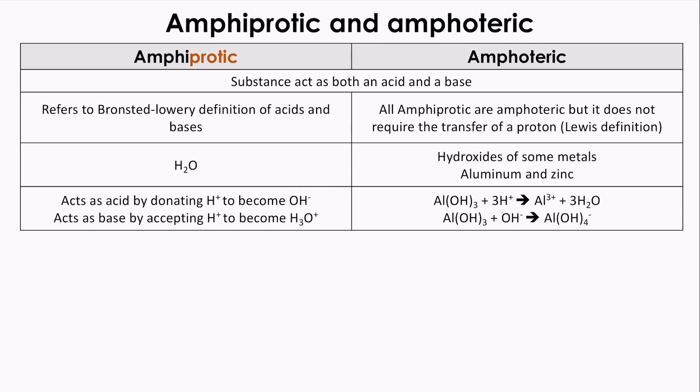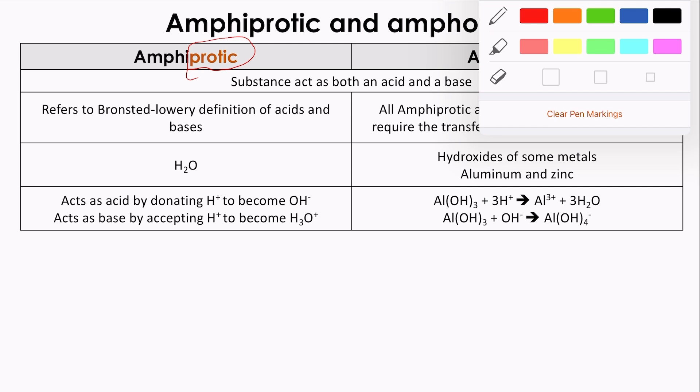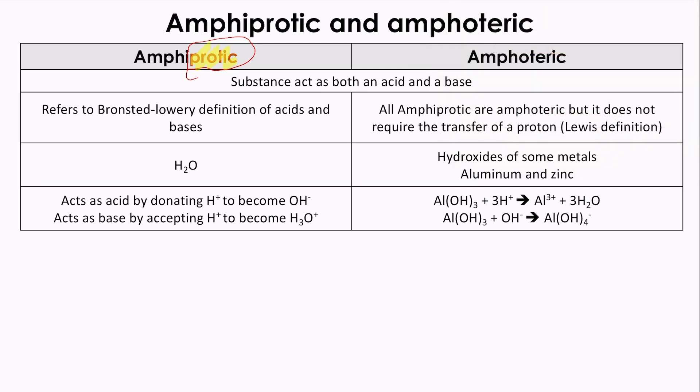First of all, we have to know what is meant by amphiprotic. From its name, we have here protic, so we have a proton. Protic refers to the proton. This is how you could differentiate between amphiprotic and amphoteric. Amphiprotic is focusing on the proton transfer. For that reason, we are here speaking about Brønsted-Lowry definition of acids and bases.